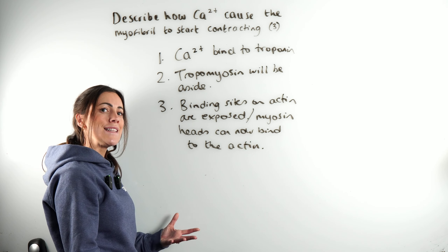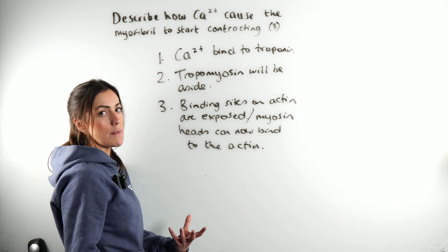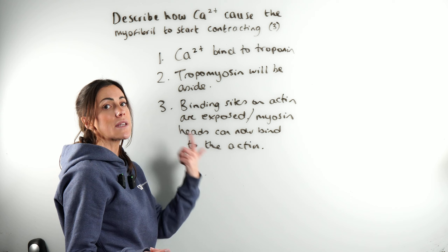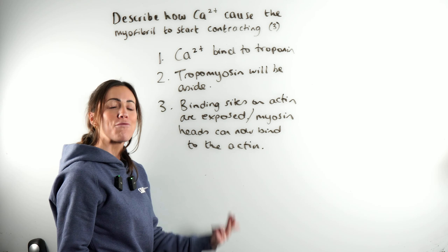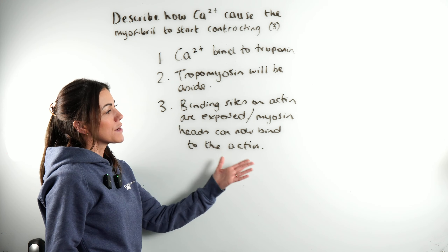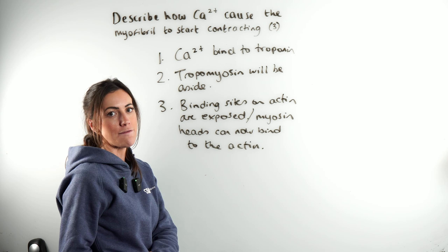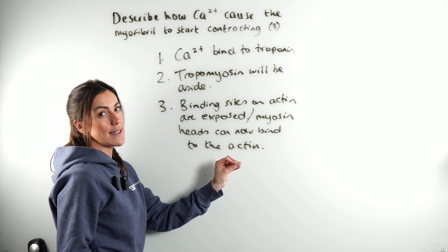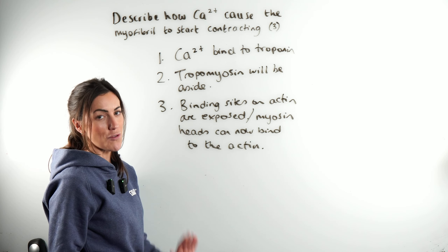We've got a lot of proteins in this question. We've got the actin filaments, which are the thin filaments, associated with tropomyosin which wraps around, and troponin which is attached to the tropomyosin. We've also now mentioned myosin, which is the thick protein filament in the myofibril. It's the myosin heads that will bind to the actin, and that's what causes the muscle to contract.